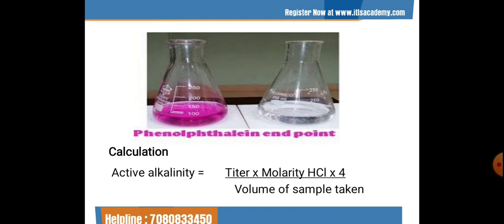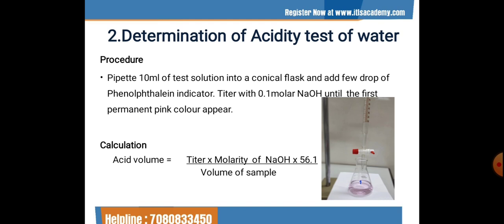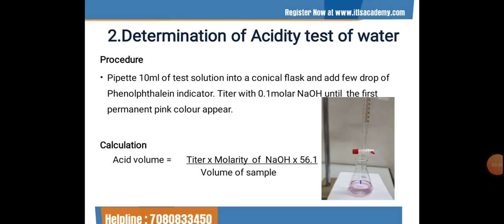The next experiment is the determination of acidity of water — that is, how much acidic substance is present in water. This method is again based on titration. We first set up the titration apparatus, collect the conical flask, measure the sample in which we have to perform the titration, and prepare the required solutions.